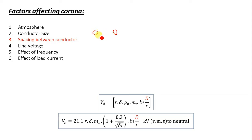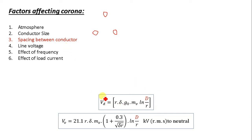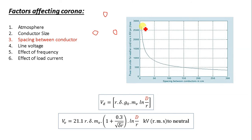However, increasing the spacing increases installation cost because the arms of the tower become wider. The spacing varies the value of d — in equilateral triangular configuration all distances are equal to d, otherwise d is the mutual GMD. This affects Vd and Vv, and ultimately the corona. As spacing between conductors increases, power loss in corona decreases.